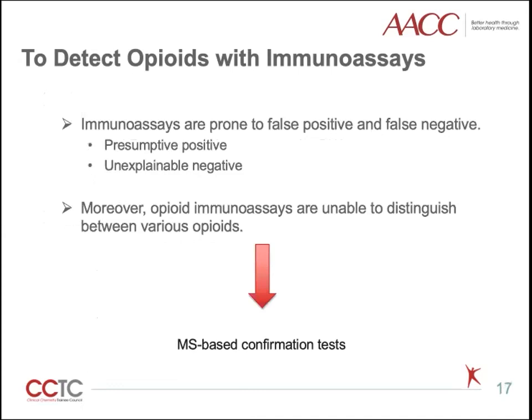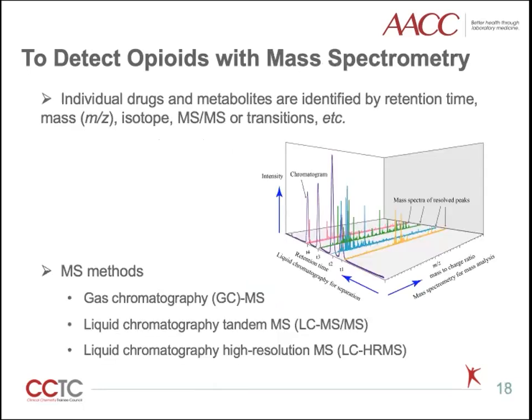As you may recall, immunoassays are prone to false positives and false negatives. Positive results are only considered as presumptive positive. Sometimes negative results are not consistent with clinical presentation. Moreover, opiate immunoassays are unable to distinguish between individual opiates. Therefore, both positive results and unexplainable negative results need to be confirmed by mass spec tests.